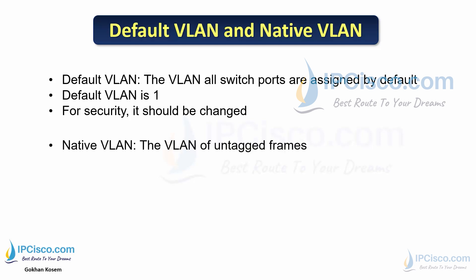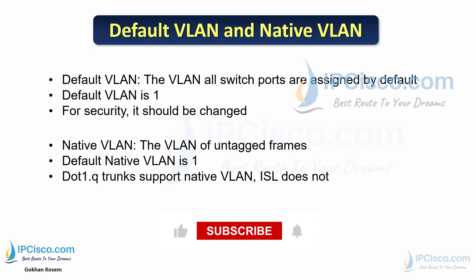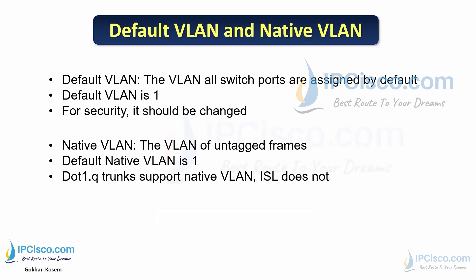The native VLAN is the VLAN for untagged frames, and the default native VLAN is also VLAN 1. When we assign a VLAN, frames are sent through that VLAN with the VLAN tag. But with native VLAN, untagged frames are accepted. There are two VLAN trunking protocols — 802.1Q and ISL. 802.1Q trunks support native VLAN, but ISL trunks do not. For example, if we change the native VLAN to VLAN 5, untagged frames and VLAN 5 frames will be accepted on that native VLAN.